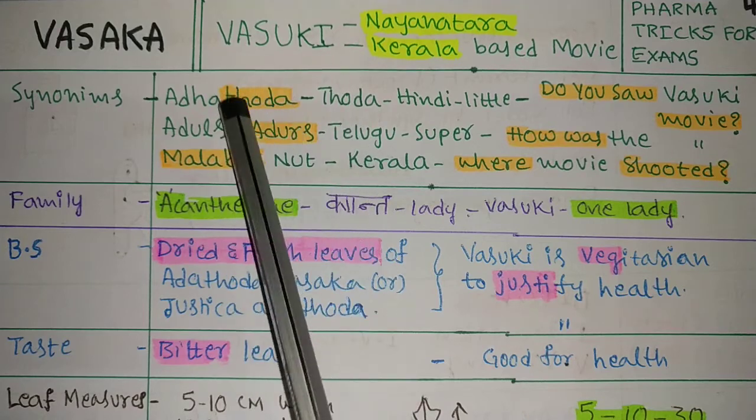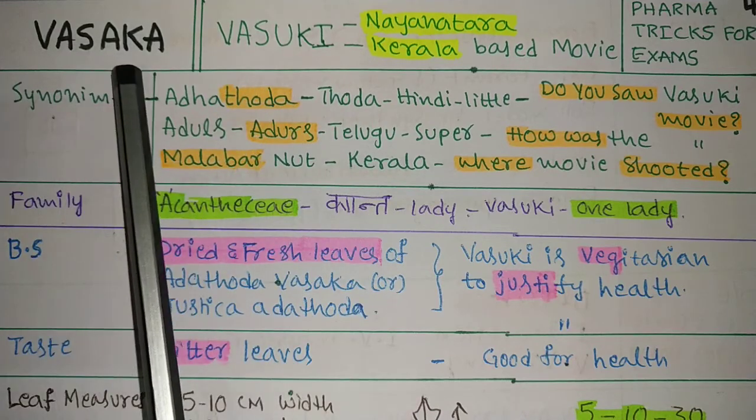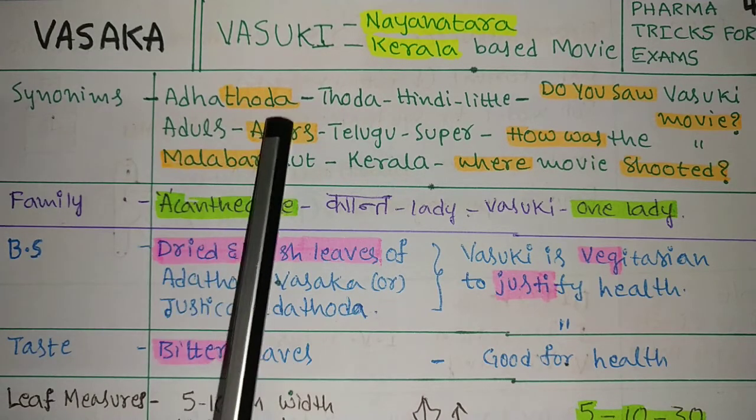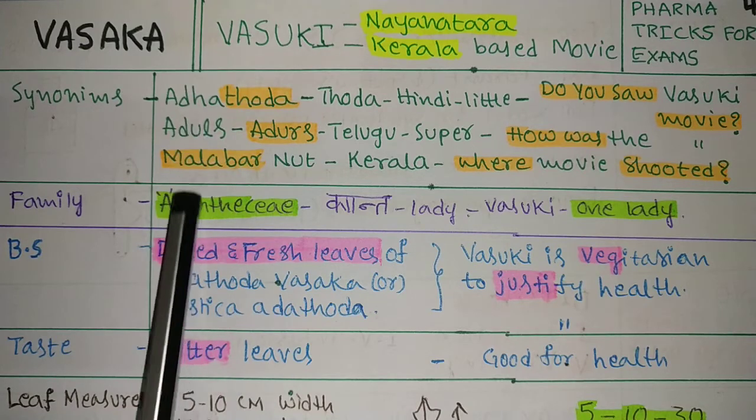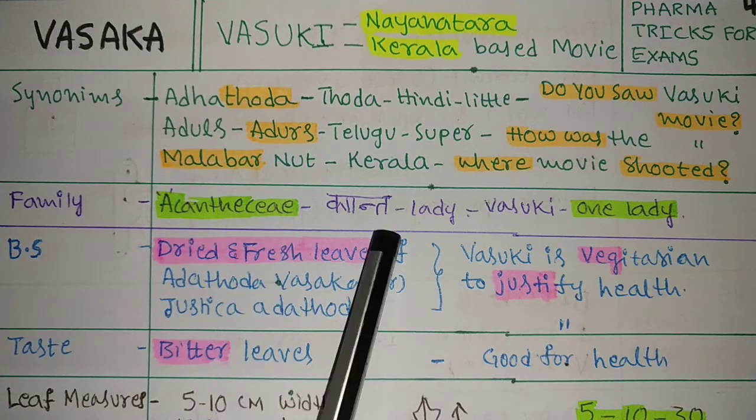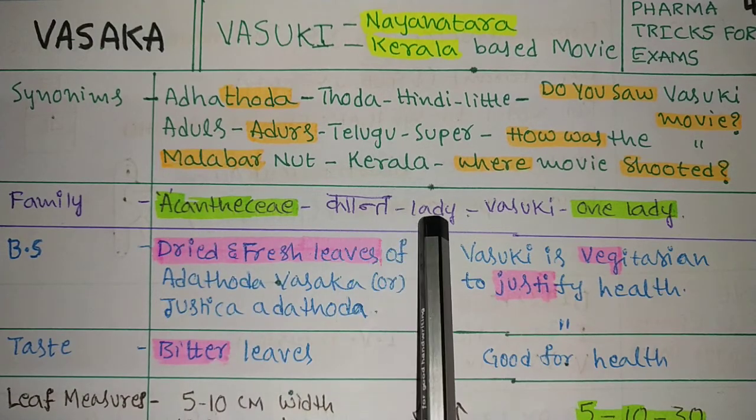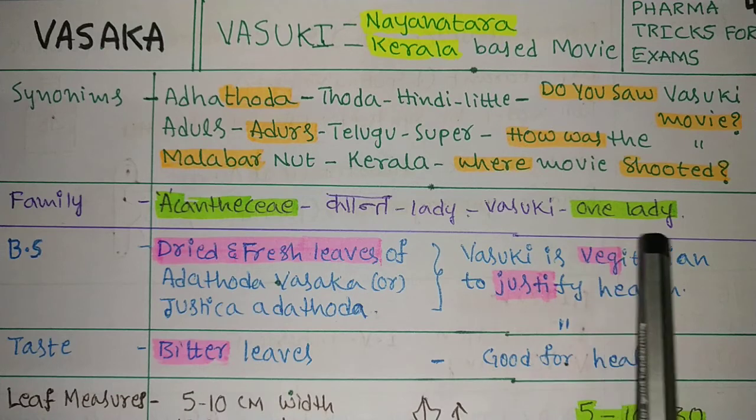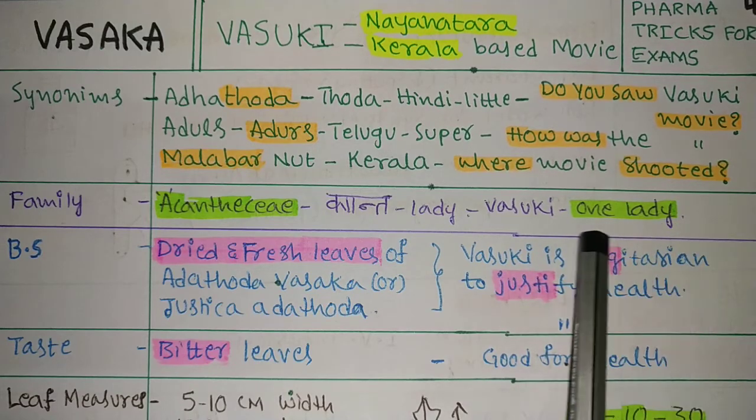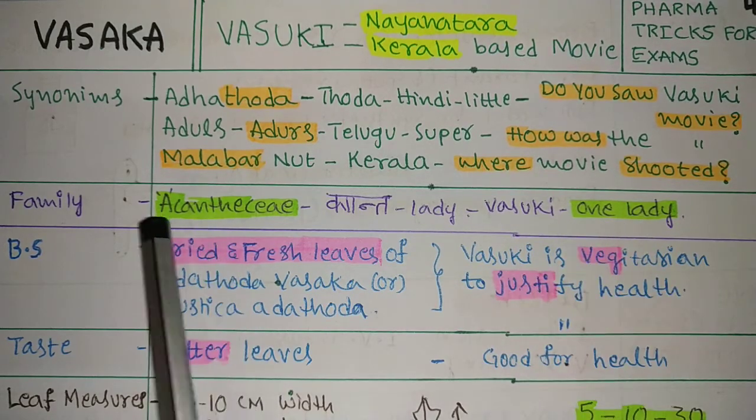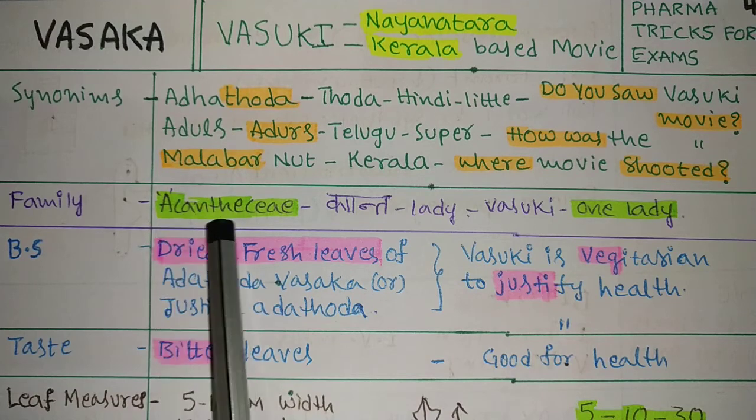In the exam, instead of giving Vasaka directly, they will give these names. Next, family: Acanthaceae. See here, Acantha. Acantha means a lady. Vasuki is one lady. 'A' means one, 'kanta' means lady in Hindi - one lady.